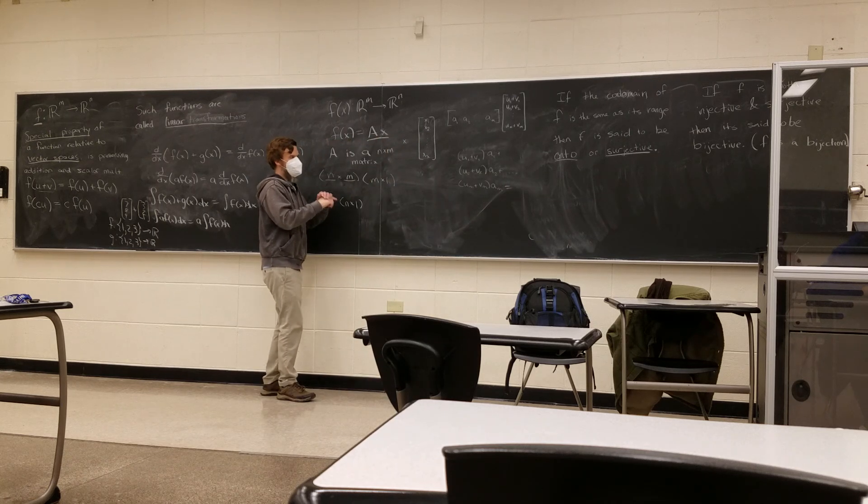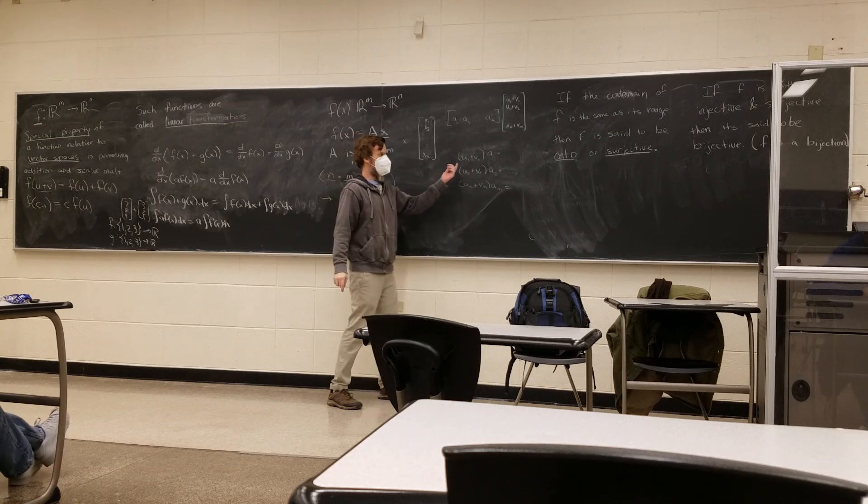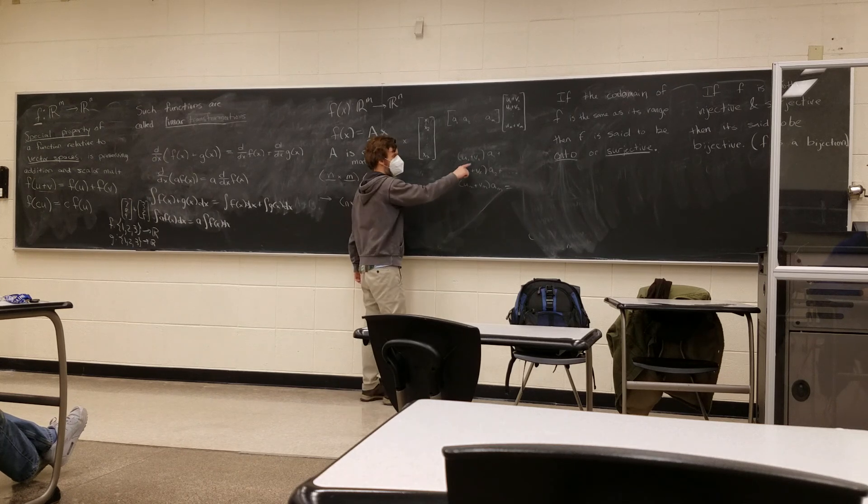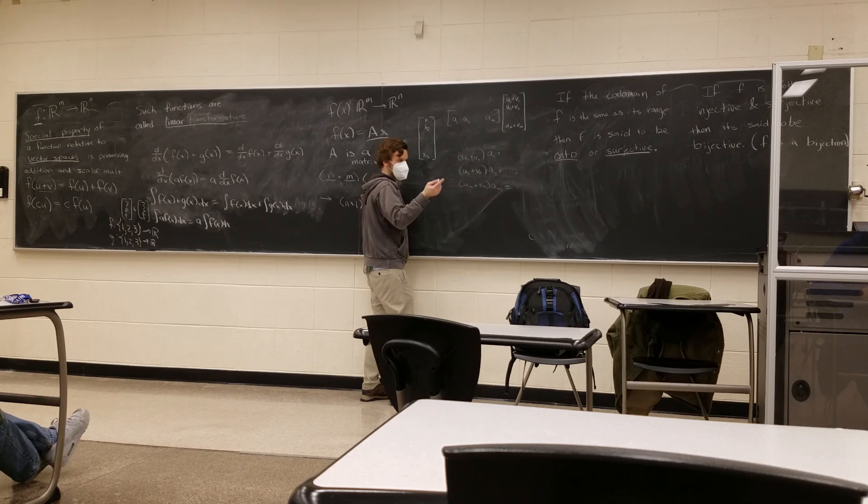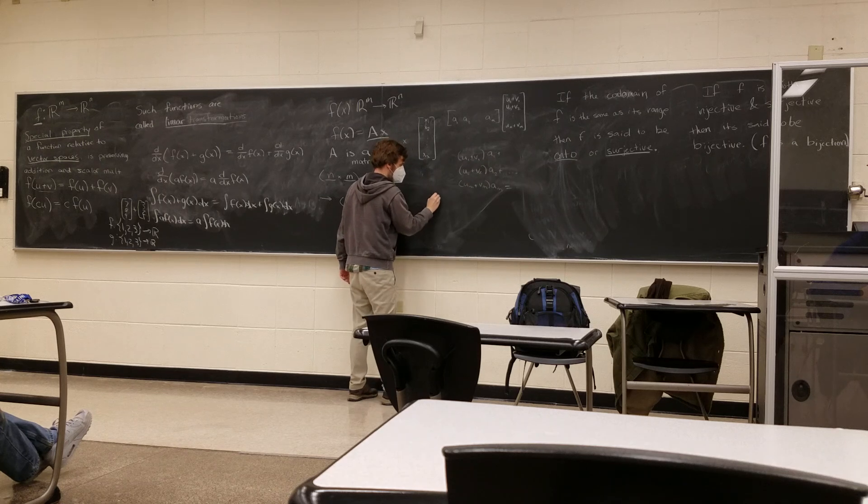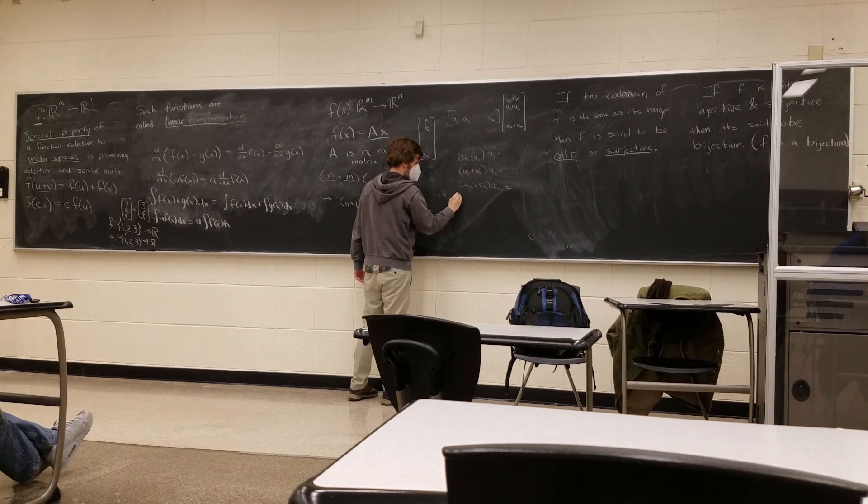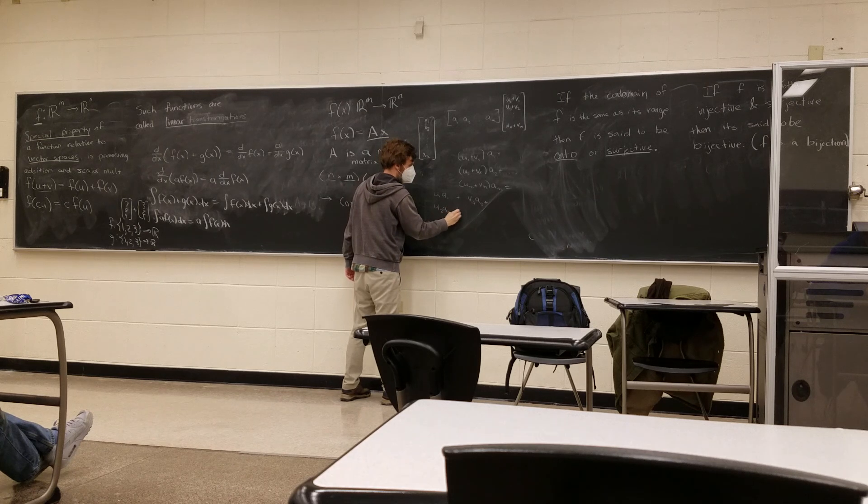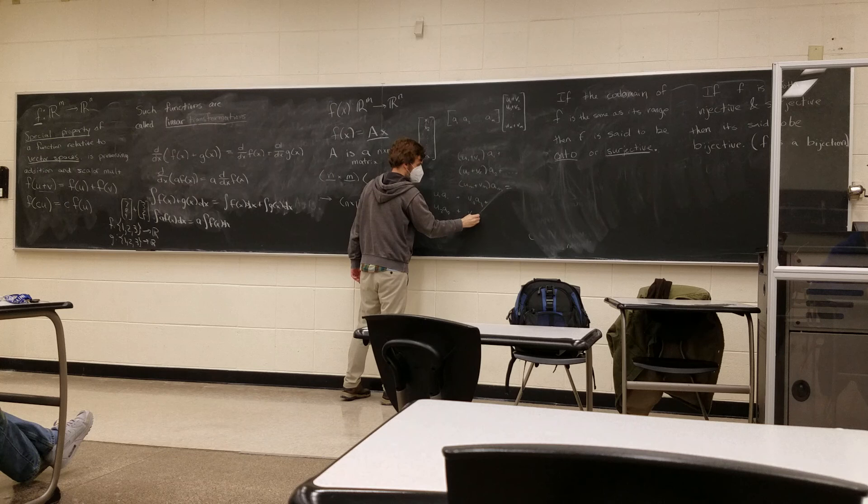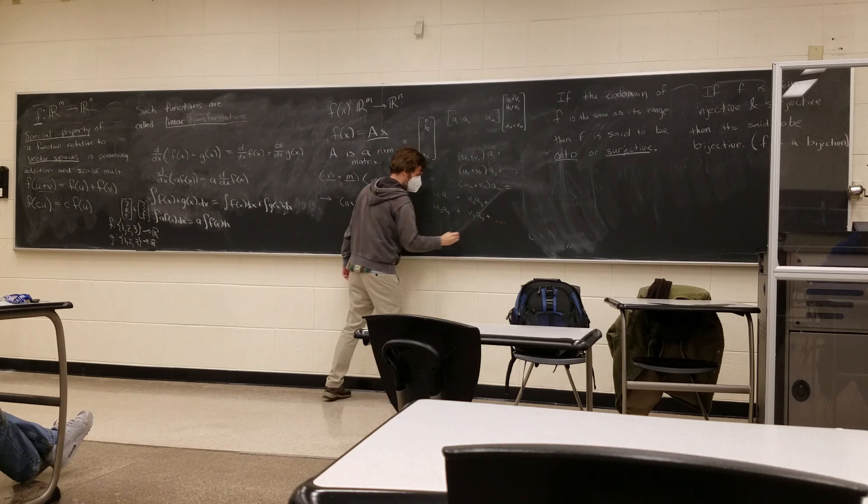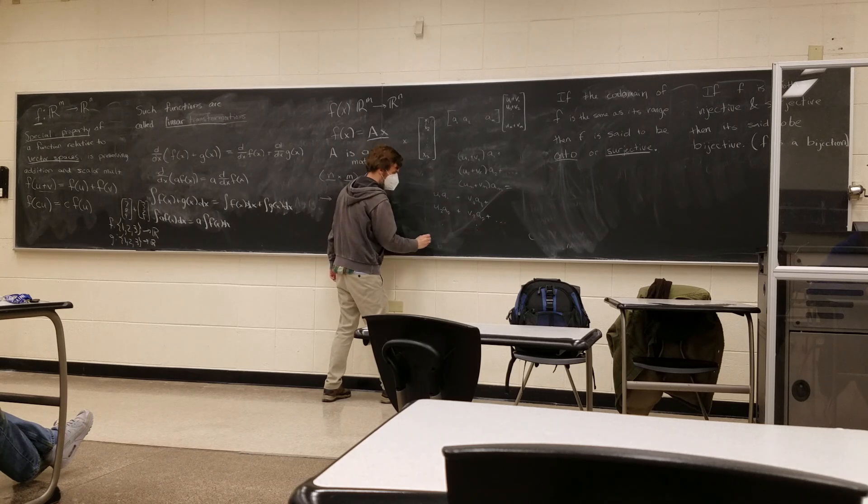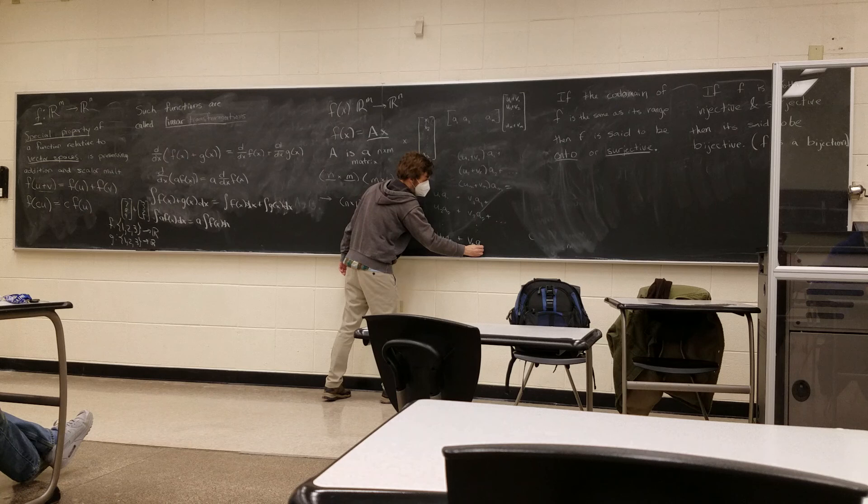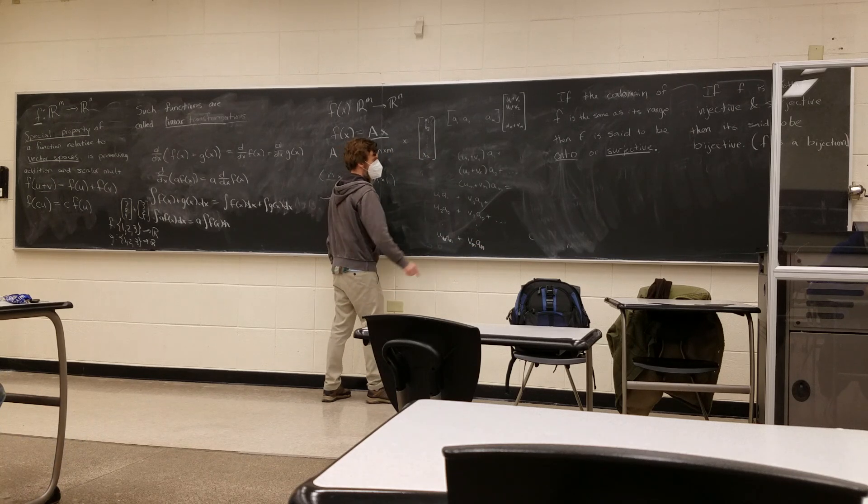Dot, dot, dot up to um plus vm times am. Now we use the distributive property for vectors. So here's the one that lets us distribute across addition scalars, whichever one that was. Rule 4. Let's distribute it like this: u1 a1 plus v1 a1, u2 a2 plus v2 a2. So these two things are equal.